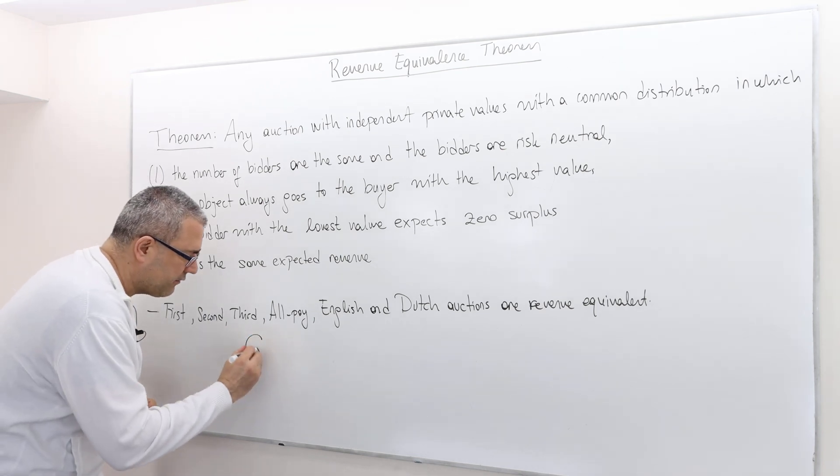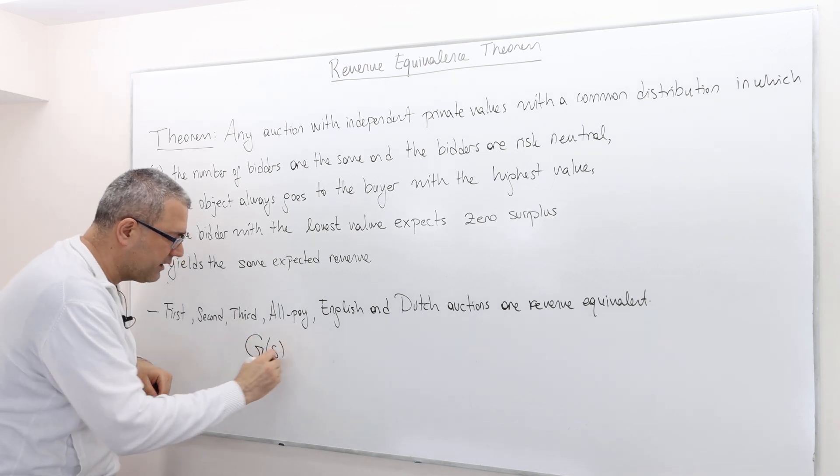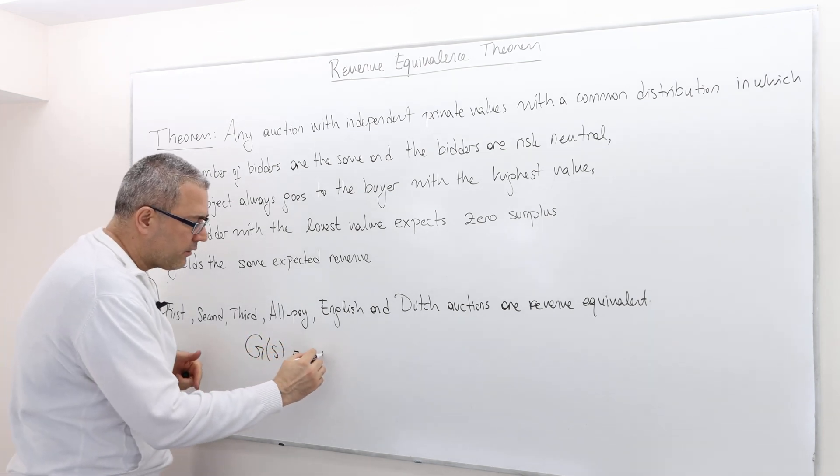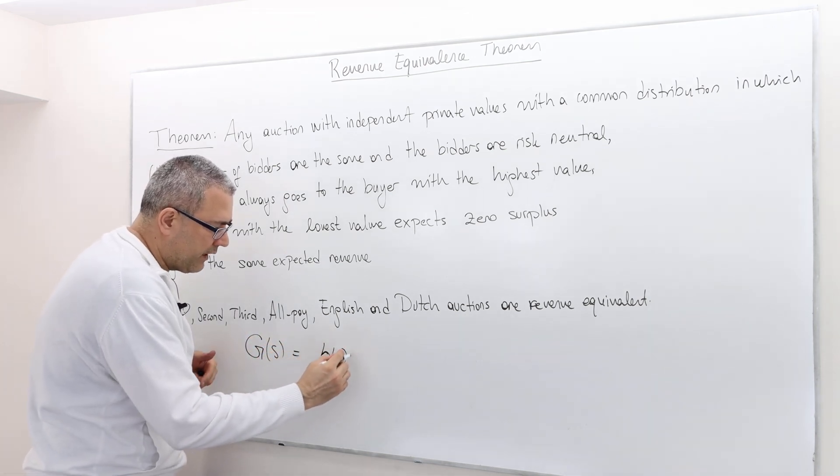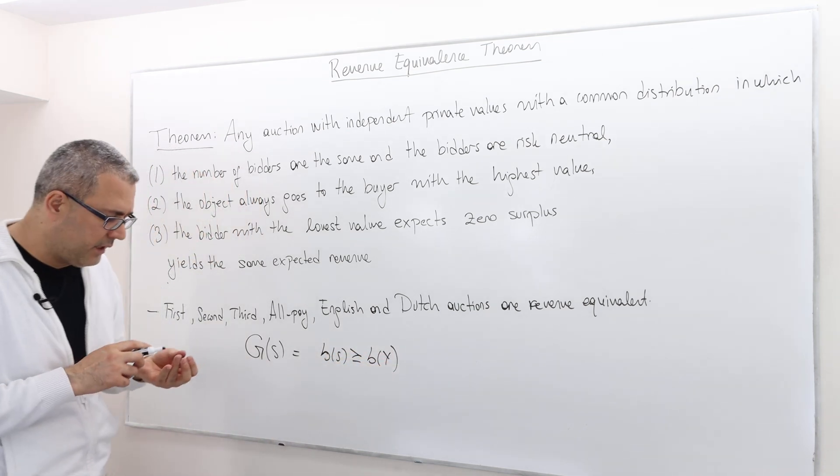The G function, the likelihood of winning the object given that you have the signal S. So there, your bid B of S basically beats all the other bids or the second highest bid.